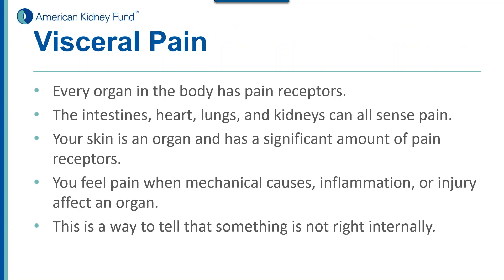Every organ in your body has pain receptors. Your intestines, heart, lungs, and kidneys can all sense pain. Your skin — the largest organ in your body — has a significant amount of pain receptors because it's exposed to the external environment. You feel pain when there are mechanical, inflammatory, or traumatic injuries to your organs, which is called visceral pain. This is your body telling you that something is wrong internally.